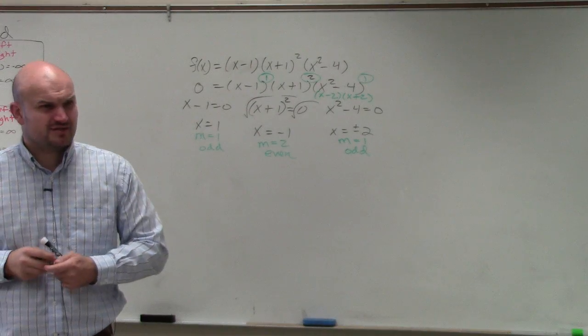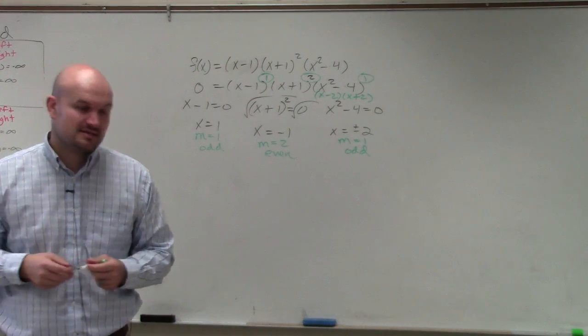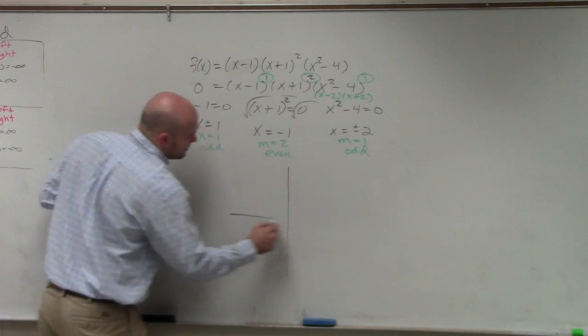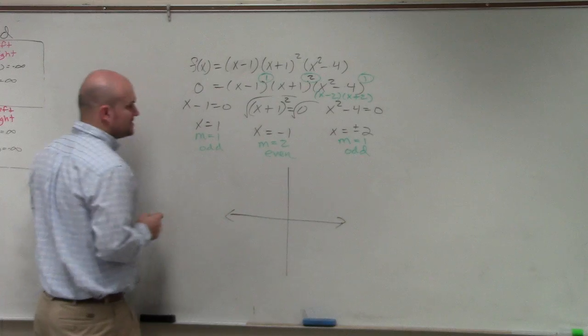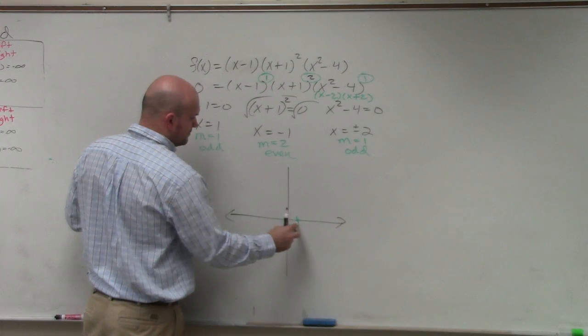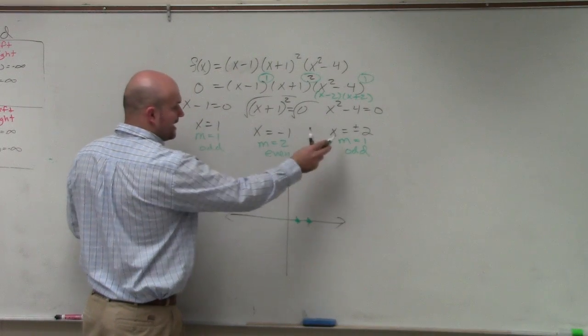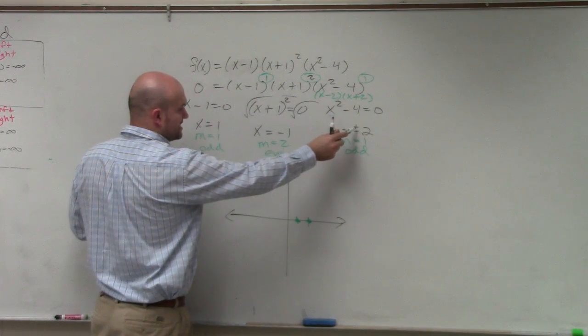Now, how can you graph this then, just knowing multiplicity, zeros, and well, you need to know end behavior. So let's first list all the zeros. So we have a 0 at 1, we have a 0 at 2.